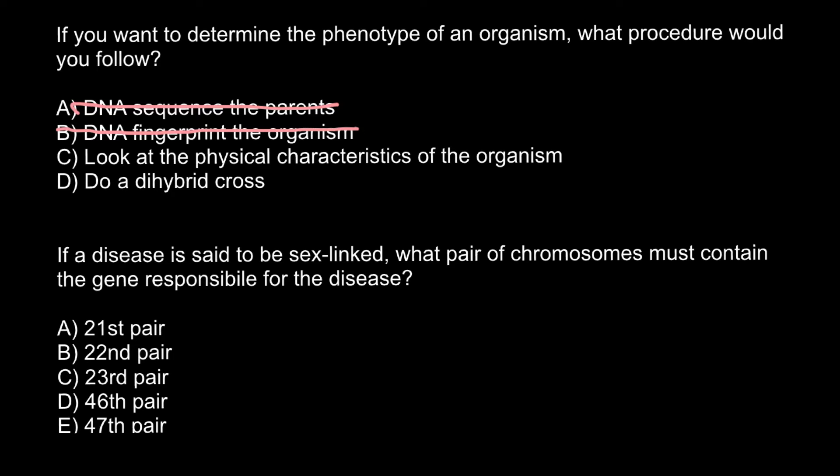Answer D — do a di-hybrid cross. We do a di-hybrid cross when we want to find out if two genes are on the same chromosome or on different chromosomes. If two genes are on the same chromosome, those two traits would tend to inherit together in the progeny. If on different chromosomes, there wouldn't be such a tendency. Also with a di-hybrid cross, if genes are on the same chromosome, we can determine the order of the genes on that chromosome. So we do not use a di-hybrid cross to find the phenotype of an organism, and we can cross out Answer D. The only correct answer here is Answer C.